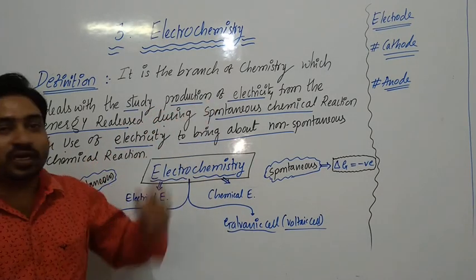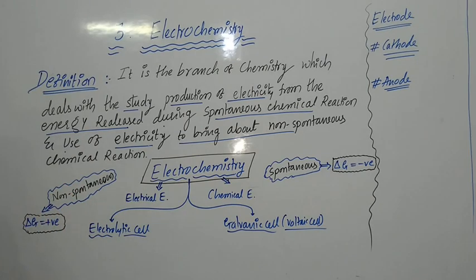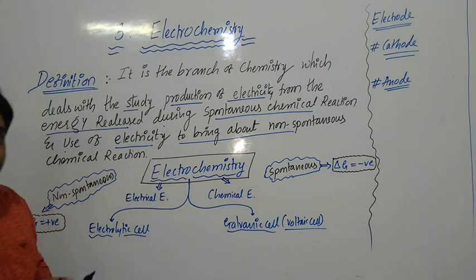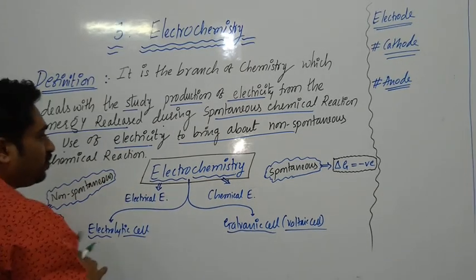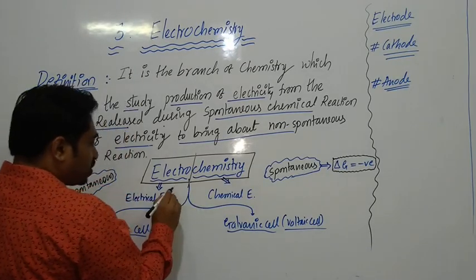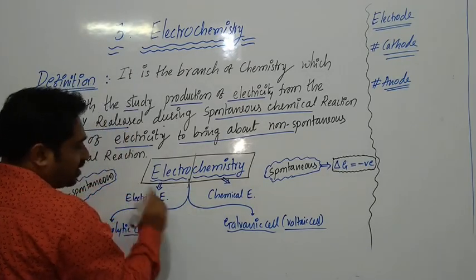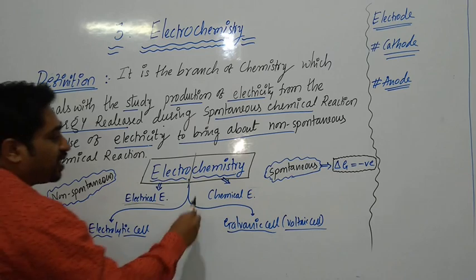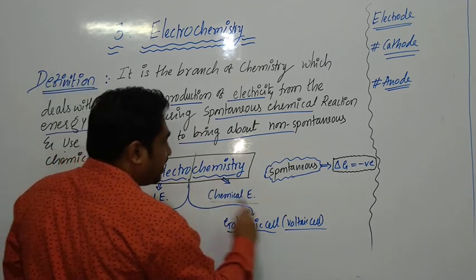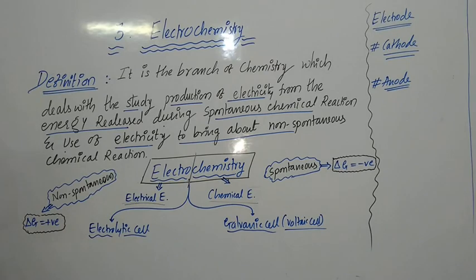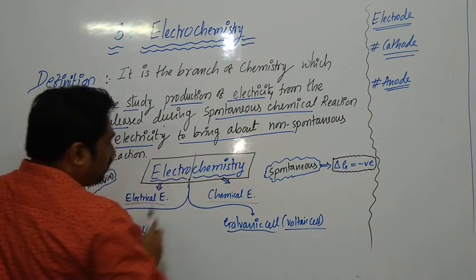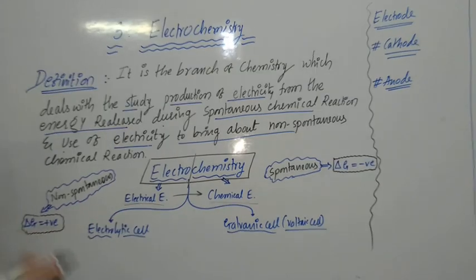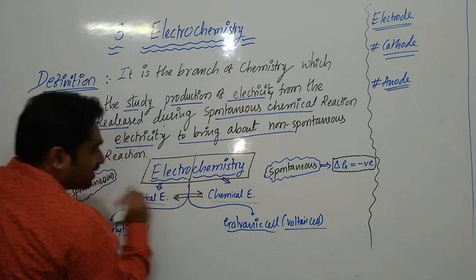So we are going to study electrochemistry. The word electrochemistry is made of two parts. The first one is 'electro', which refers to electrical energy — electro means electrical energy. The second part is 'chemistry', which mainly refers to chemical energy. Chemistry is nothing but chemical energy. So in this topic we are going to study the interconversion of electrical energy into chemical energy as well as chemical energy into electrical energy.